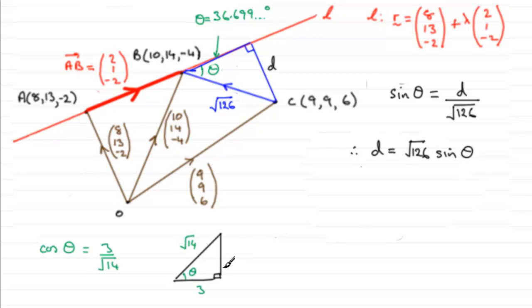And by Pythagoras' theorem you could work out what this side is. It would be the hypotenuse squared minus the shorter side squared, all square rooted. So it would be the square root then of the hypotenuse squared which is going to be 14 minus 3 squared which is 9. So it's going to leave you with root 5.